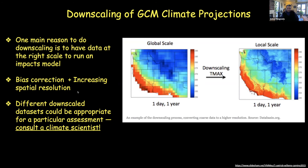There are two steps critical to downscaling. The first is bias correction — when you do global climate modeling you try to correct things at the global scale, but you can find biases at regional scales. A model might be three degrees warmer at your location, or showing 50% more precipitation than observed, and you need to bias-correct for that. The other step is increasing the spatial resolution. The bias correction step is usually the more complicated one.